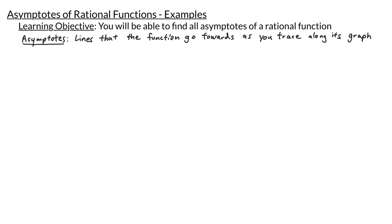First off, asymptotes are lines that the function goes towards as you trace along its graph. There are three types of asymptotes that we've learned about: vertical asymptotes, horizontal asymptotes, and oblique asymptotes. Let's go over how we find each of these types.